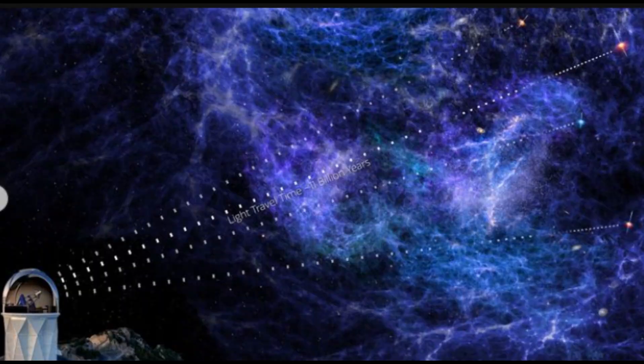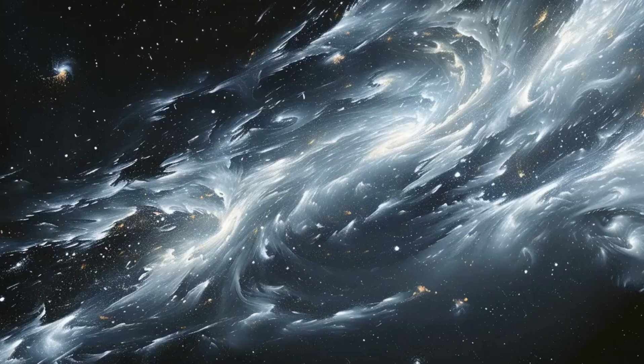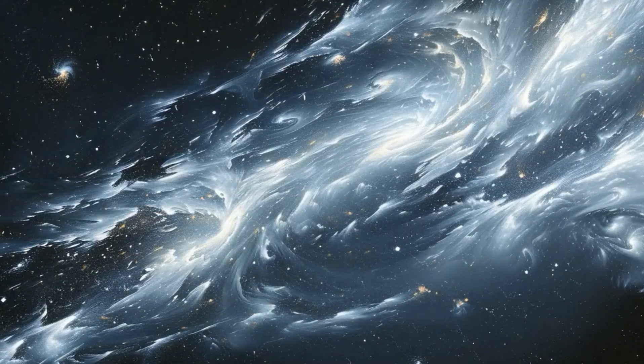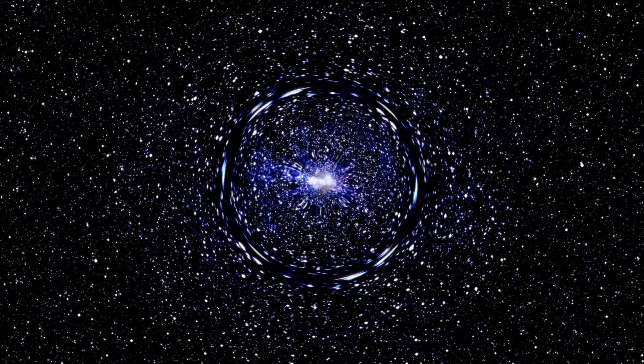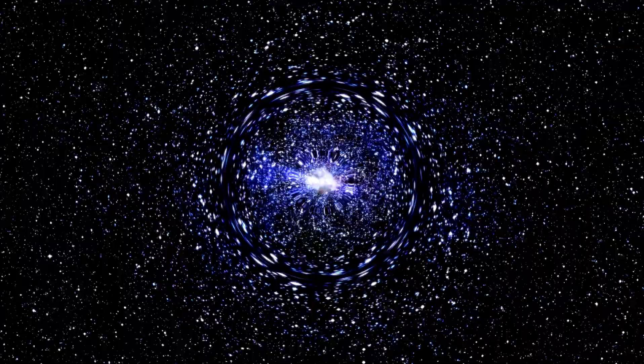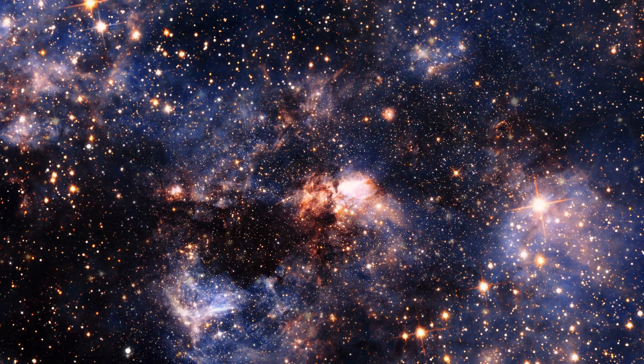The map also highlights a faint pattern known as baryon acoustic oscillations, which are subtle 3D wrinkles that formed in the early universe. These wrinkles provide a cosmic ruler that helps astronomers estimate distances to galaxies and infer the universe's expansion rate at various points in time.